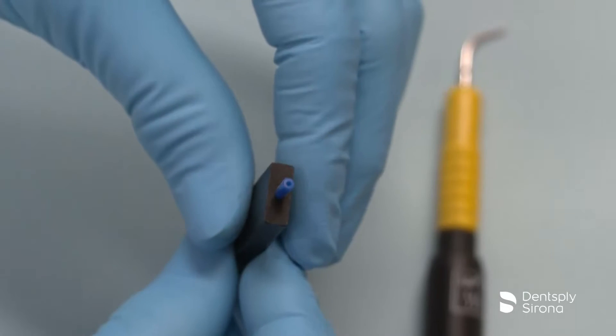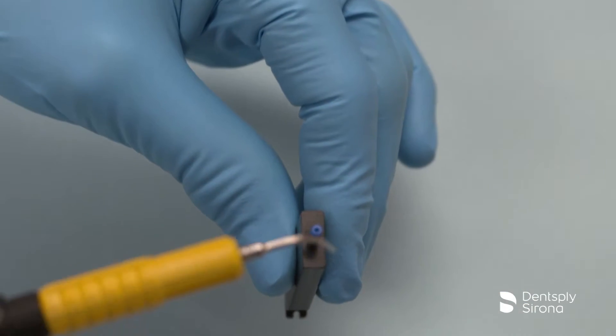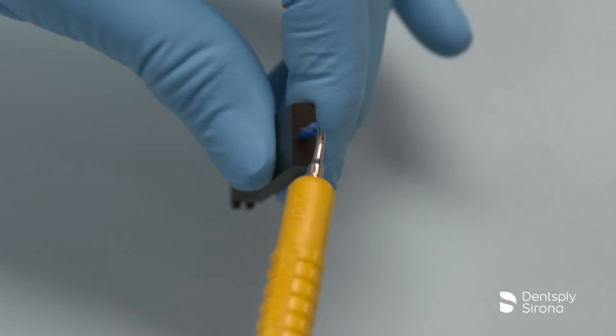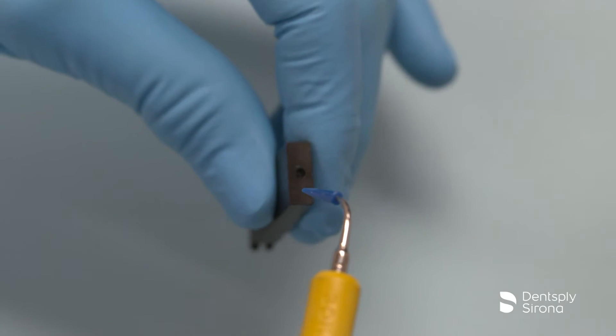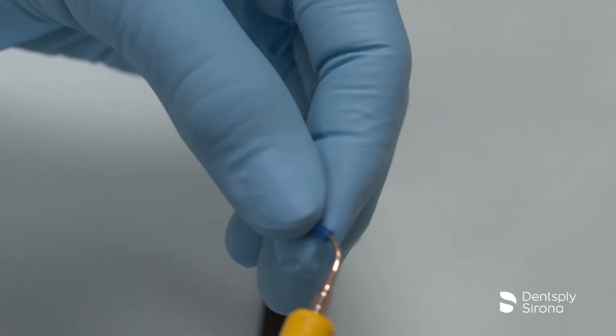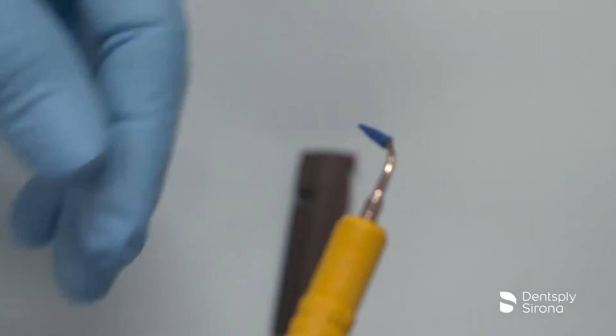Insert the metal tip of the insert into the opening of the Profi-Tip and twist one-quarter turn while applying firm pressure to securely seat the disposable Profi-Tip on the metal insert tip. Disengage the Profi-Tip from the wrench and gently pull on the Profi-Tip to verify that it is securely in place.